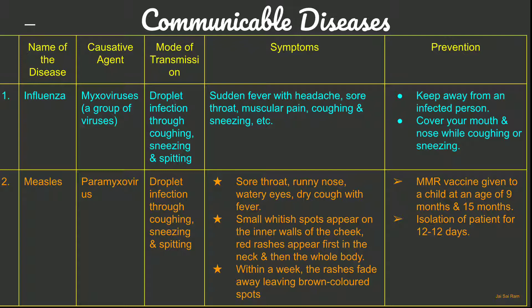Measles is caused by paramyxovirus and the mode of transmission is viral droplet infection through coughing, sneezing and spitting. Symptoms include sore throat, runny nose, watery eyes, dry cough with fever, and small white spots on the inner walls of the cheek. Red rashes appear first on the neck and then spread over the whole body, fading within a week and leaving brown colored spots.